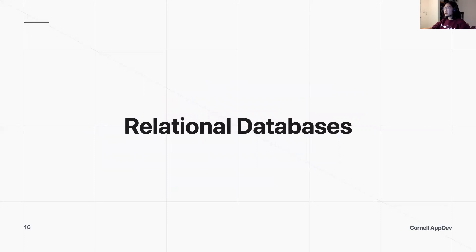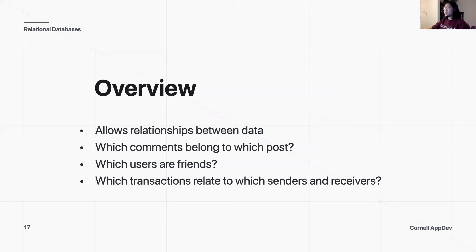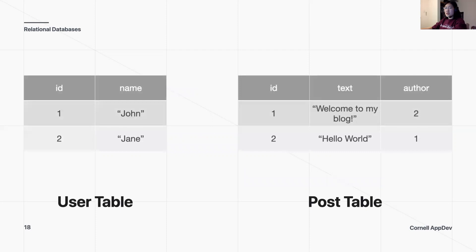Let's talk about relational databases. What happens when we want more than one type of data within a database? As the name implies, relational databases allow relationships between data. So in the context of what we've been doing — which comments belong to which posts, which users are friends with each other, or which transactions relate to which senders and receivers? We have different types of data — how are we relating them to each other?